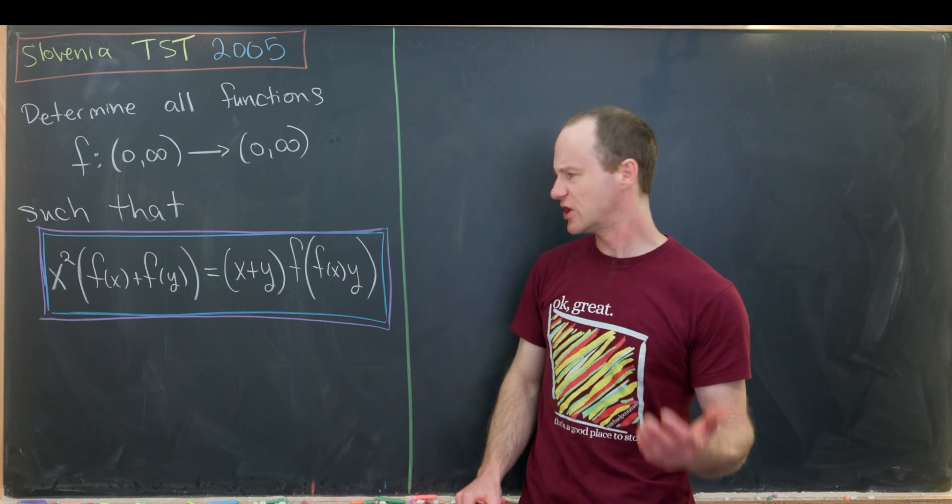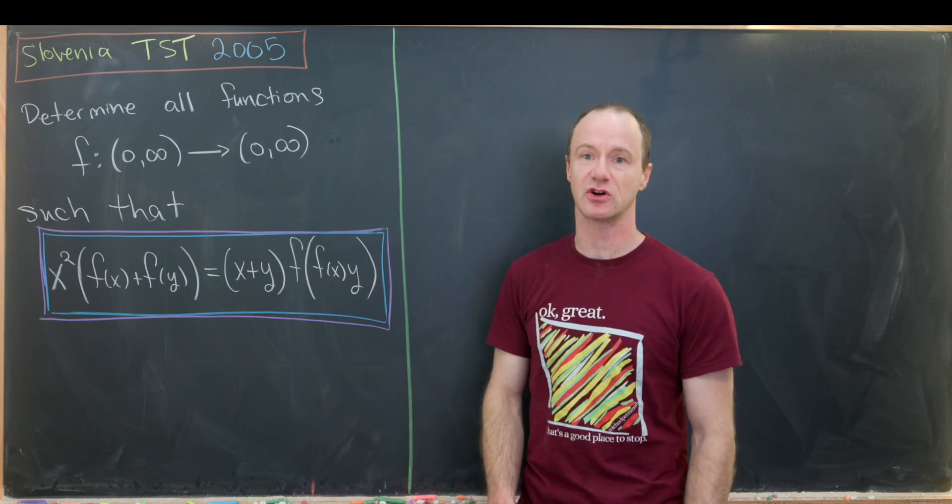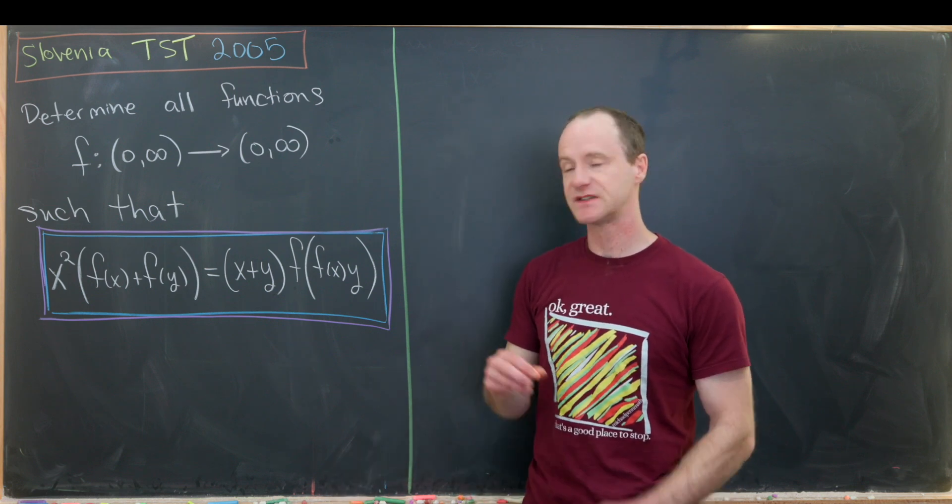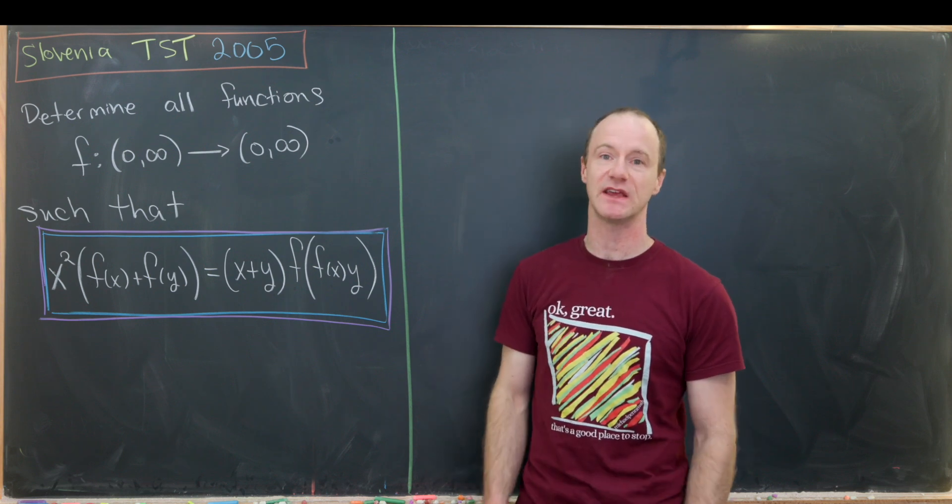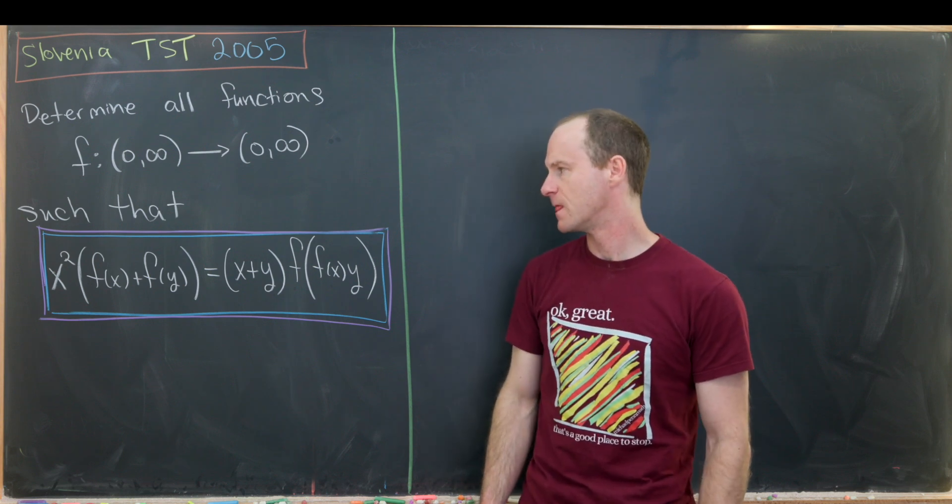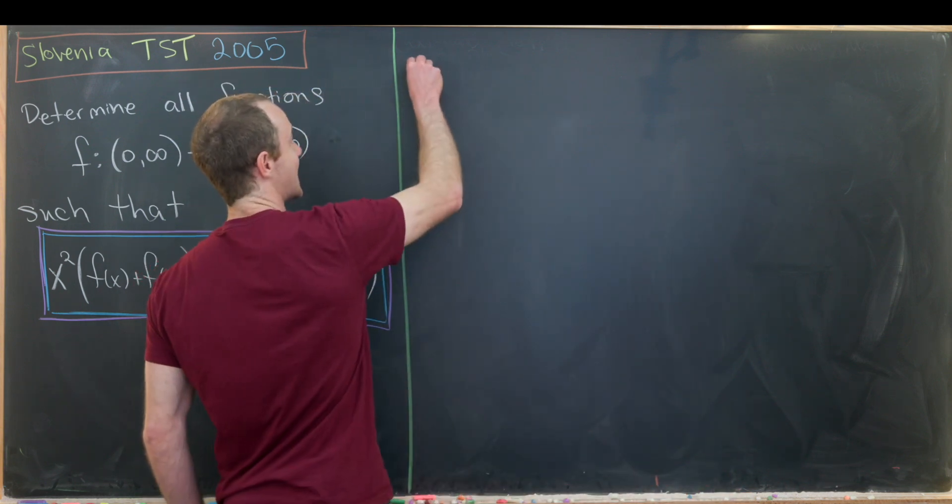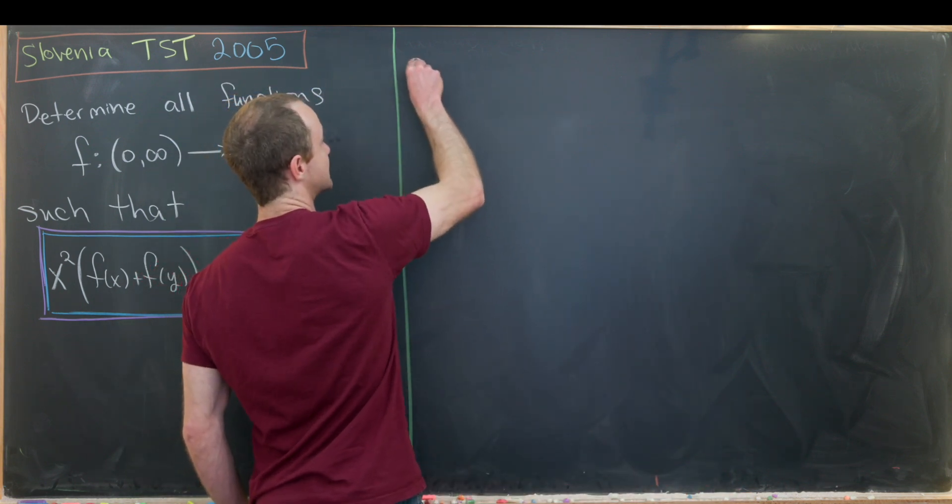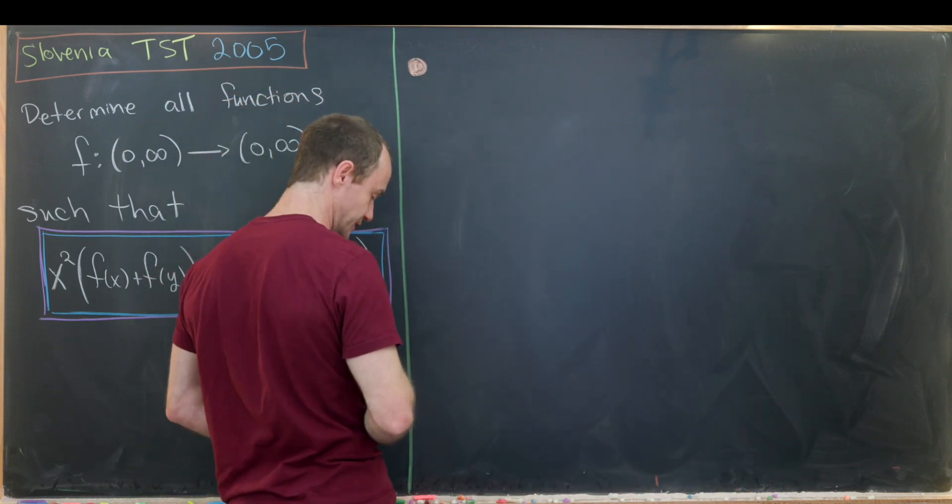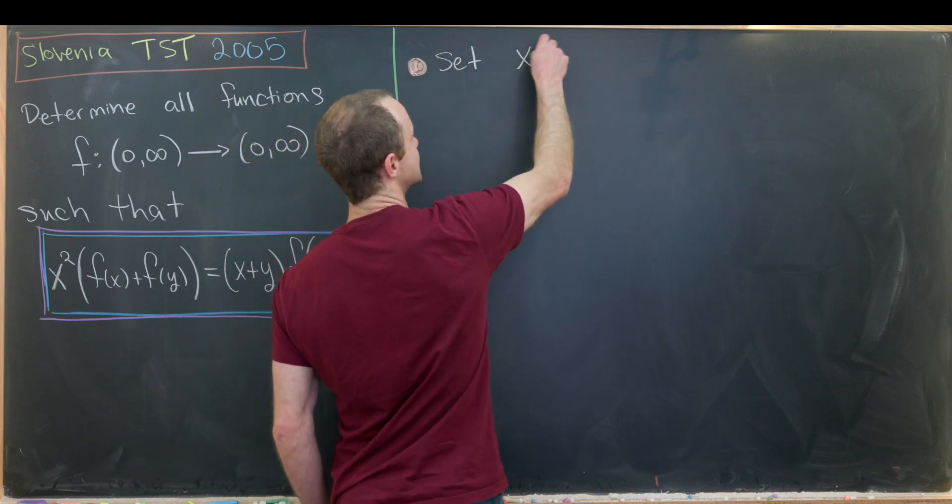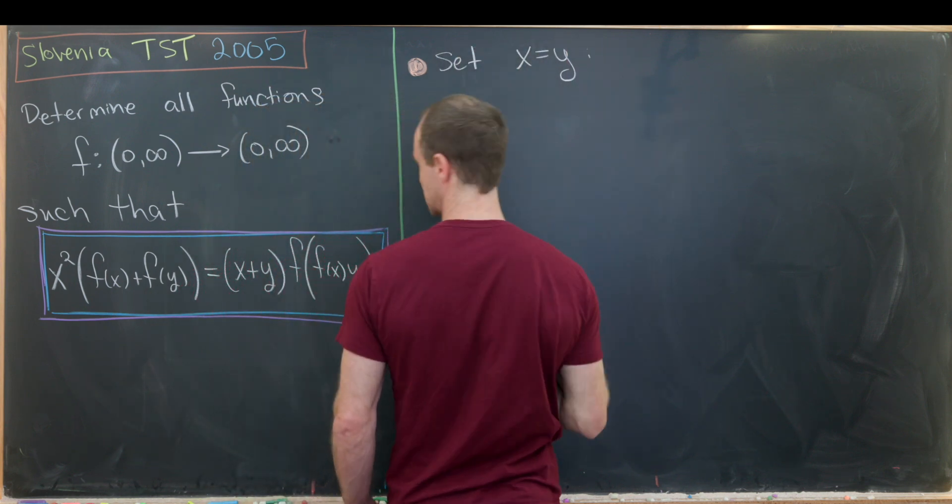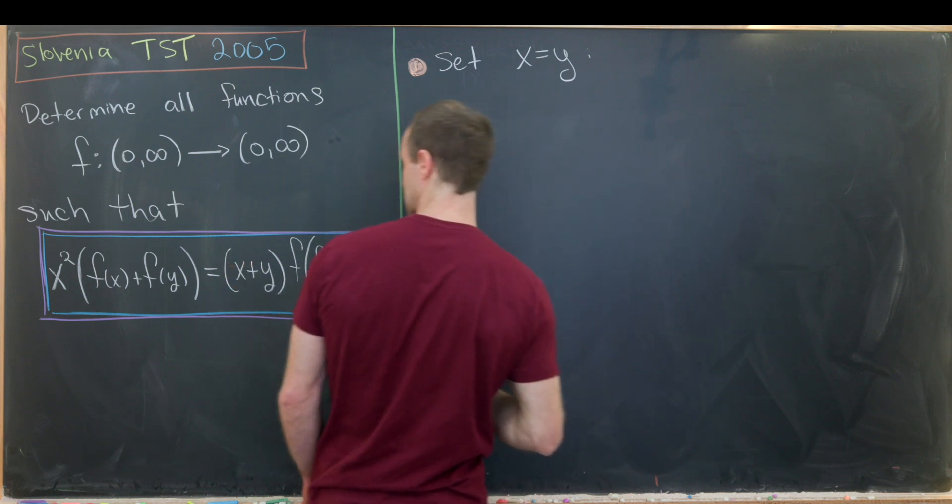Generally, one of the first things that you want to start doing here is substituting different values for x and y to see if we can get some simplification. The first thing I'll do is set x equal to y. So set these two variables equal to each other and see what we get.